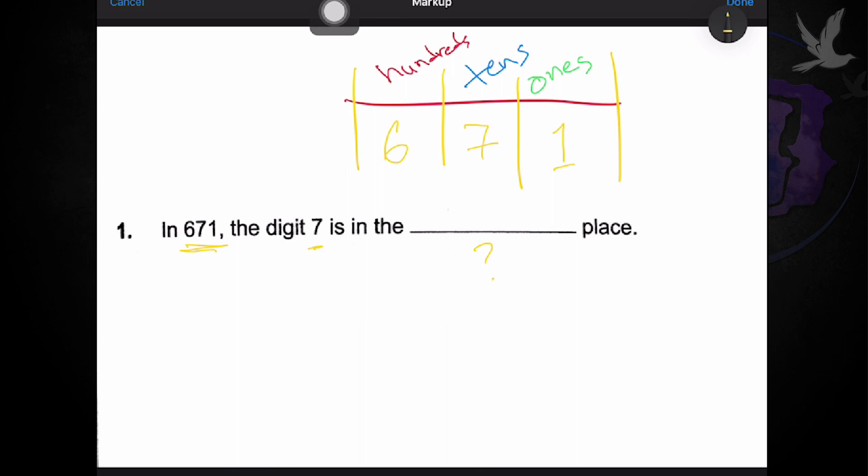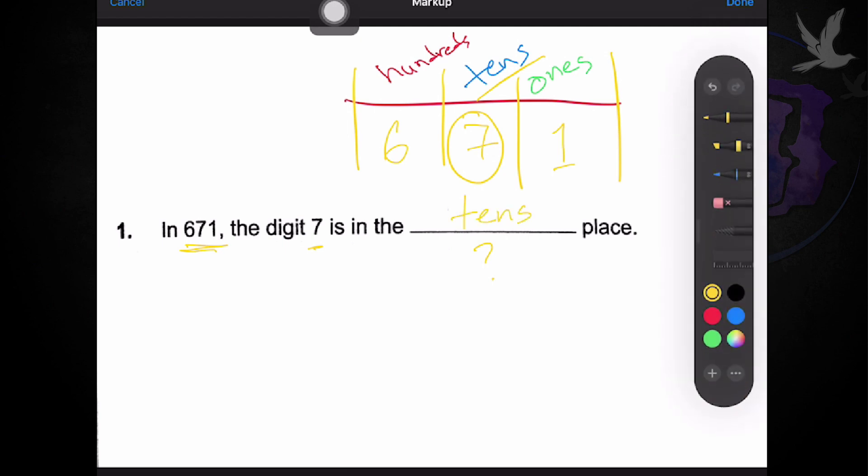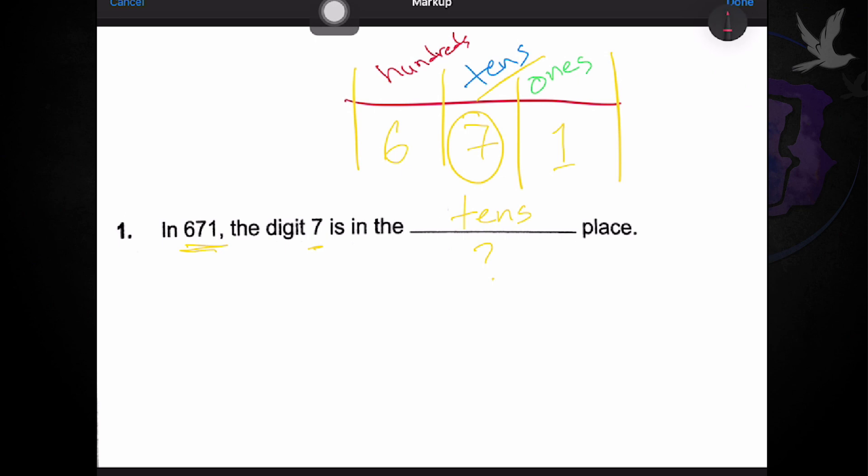you would notice that seven belongs to what place? To the tens place. So, we can now say that the digit seven is in the tens place. Okay. So, if you are a beginner, I would advise you to make use of this process to get to the answer.